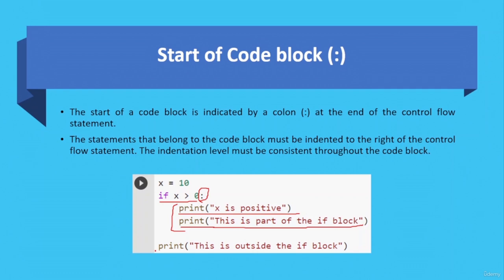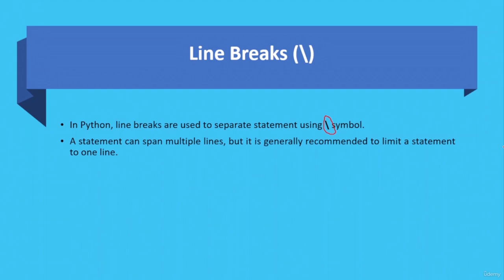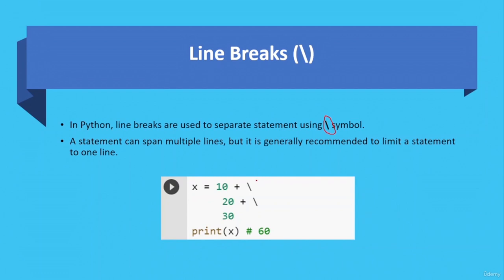In Python, line breaks are used to separate statements using the backslash symbol. A statement can span multiple lines, but it is generally recommended to limit a statement to one line. For example, if you are adding three numbers and assigning the value to x, you can do it in a single line or use the backslash for a line break. If you print the result of x, you'll get 60 because the sum of those three numbers is 60.